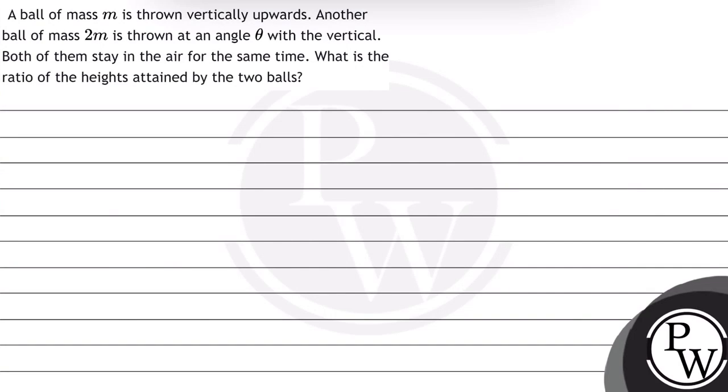Hello, let's read this question. A ball of mass m is thrown vertically upwards. Another ball of mass 2m is thrown at an angle θ with the vertical. Both of them stay in the air for the same time. What is the ratio of the heights attained by the two balls?